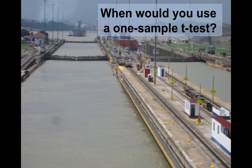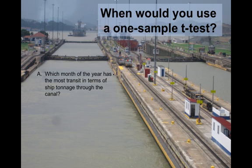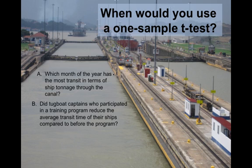So let's end with an example. Here's a picture of the Panama Canal, and we have a few questions about possible tests you could run or questions you might want to answer, and for which of these would you use a one-sample t-test? Question one is, which month of the year has the most transit in terms of ship tonnage through the canal? Two, did tugboat captains who participated in a training program reduce the average transit time of their ships compared to before completing the program? Would you use a one-sample t-test on either of those?